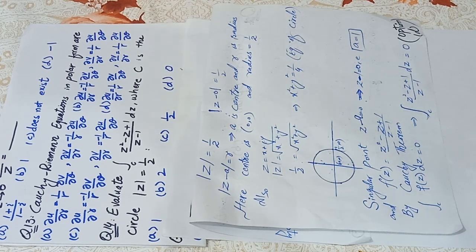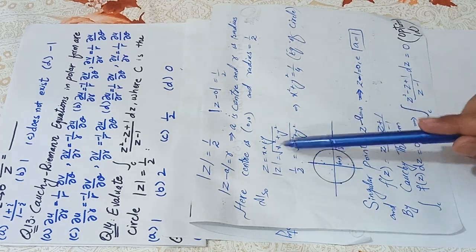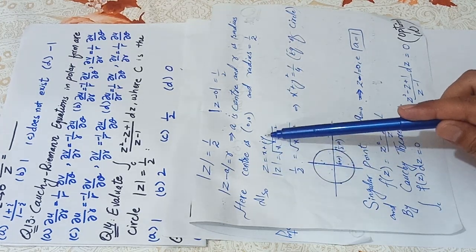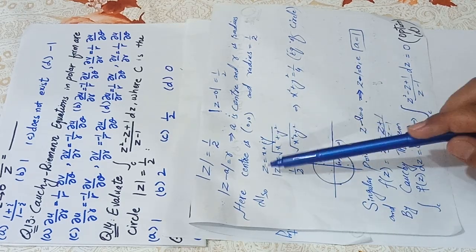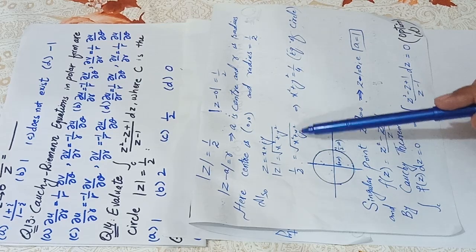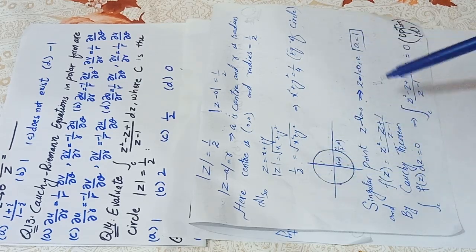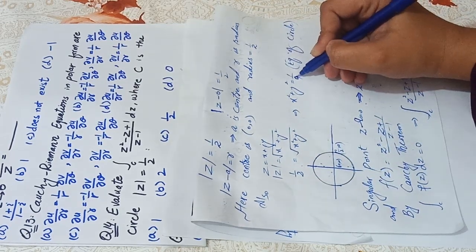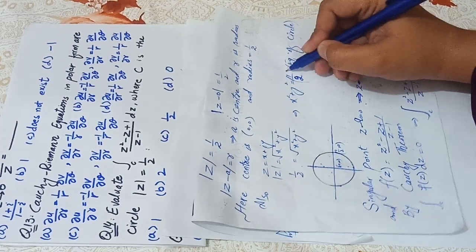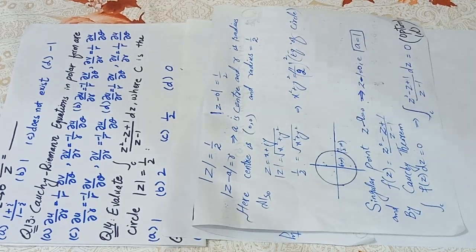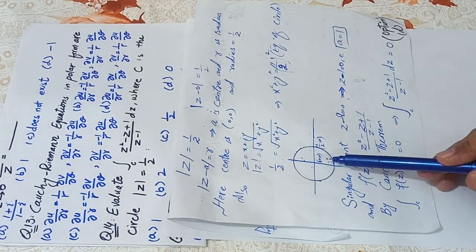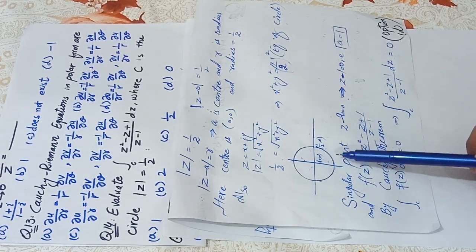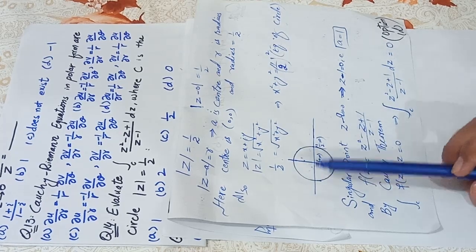Since Z = x + iy, its modulus is √(x² + y²), and we're given |Z| = 1/2. Squaring both sides: x² + y² = 1/4, which is the equation of a circle x² + y² = R². So we draw a circle centered at (0, 0) with radius 1/2.